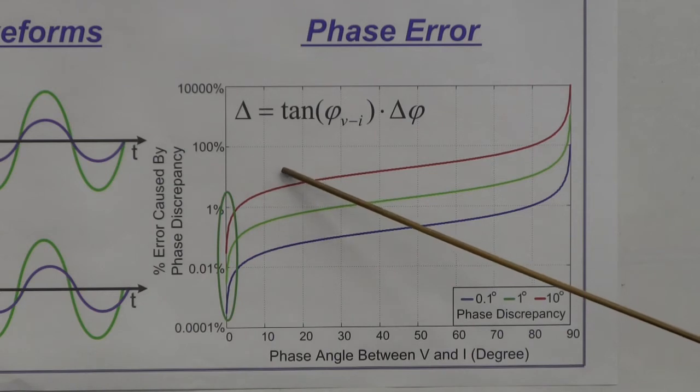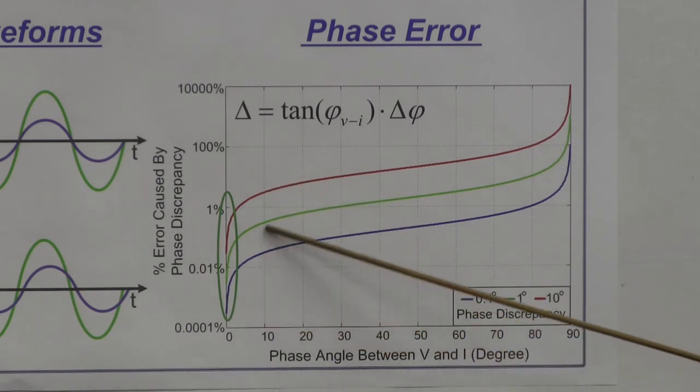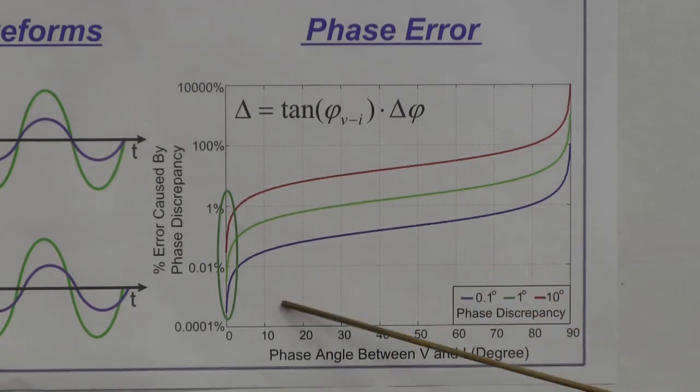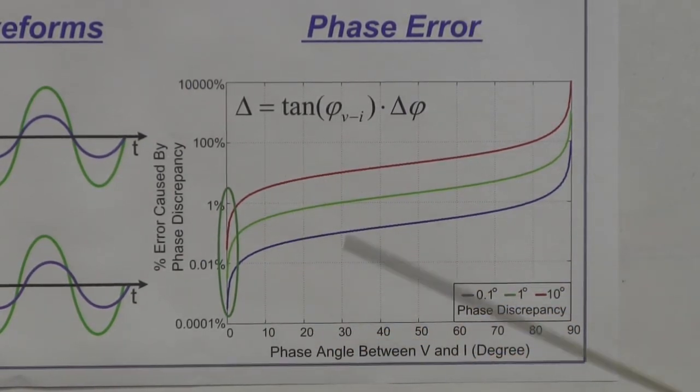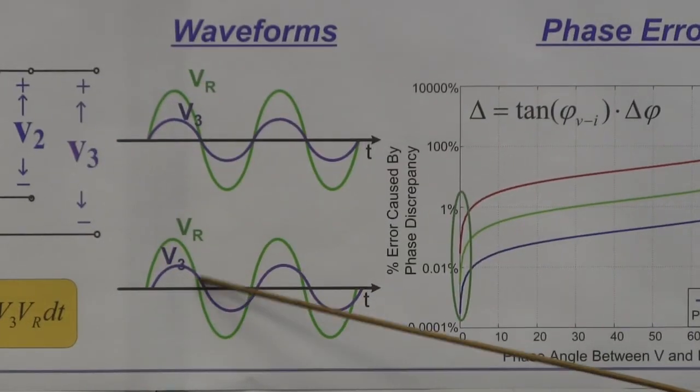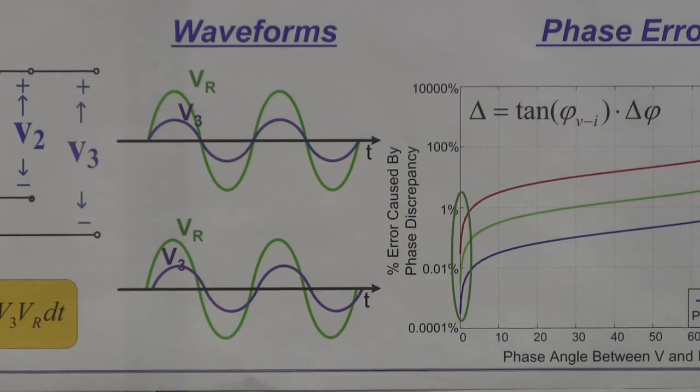Actually, the measurement does not need to be exactly at zero degrees. If there is a small phase difference, like 10 degrees, the phase error will be small. For example, if the two waveforms are not exactly in phase, the measurement could still be fine.